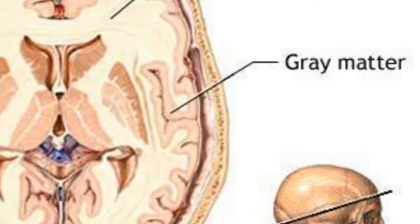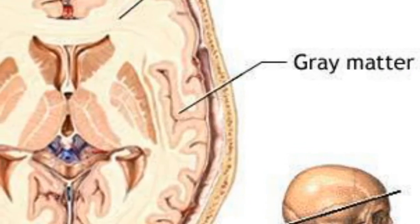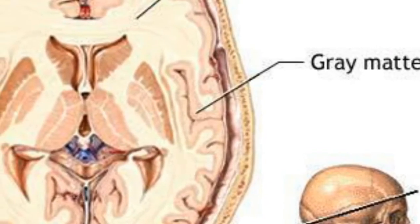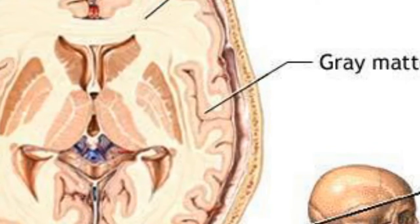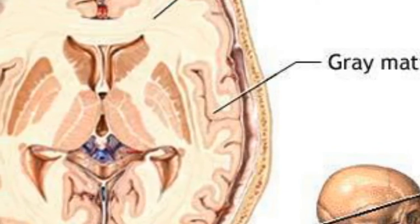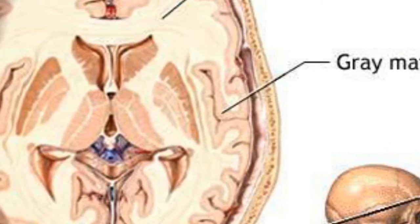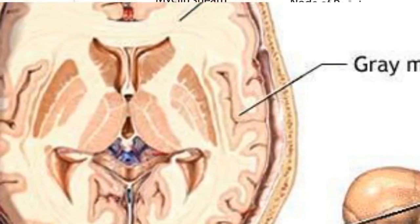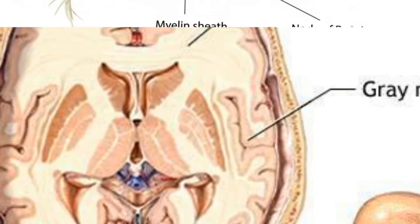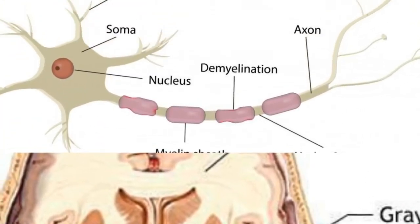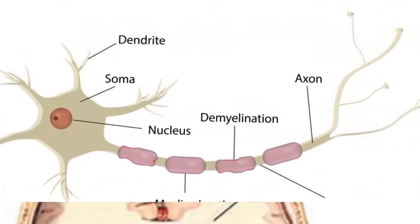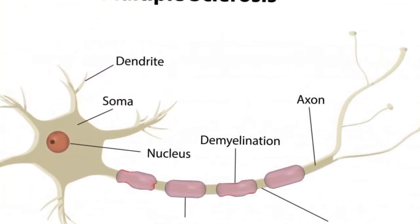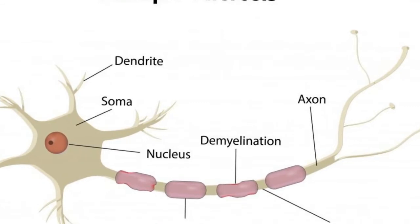Subcortical white matter, often simply called white matter, is a region inside the brain that has a high concentration of nerve fibers. These fibers are coated with a protein called myelin, which assists in transmission of electrical impulses down the fibers.